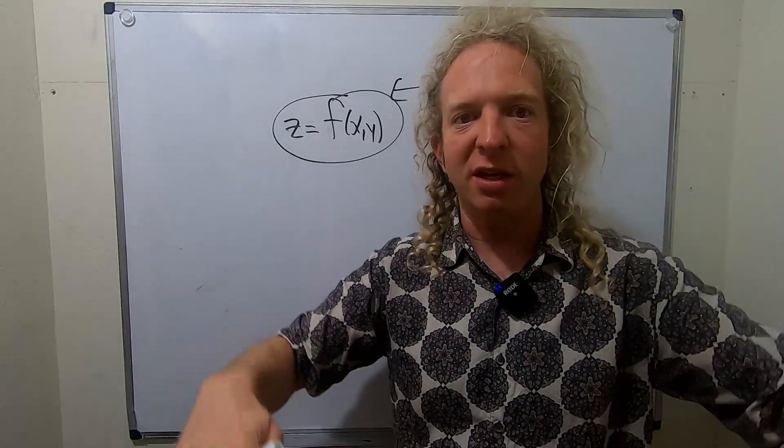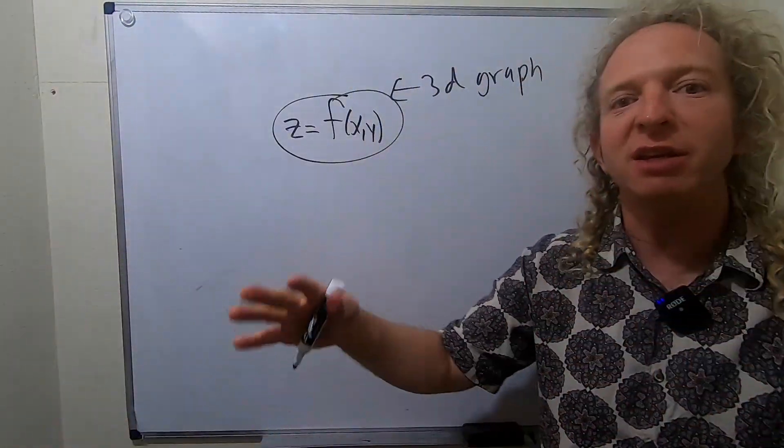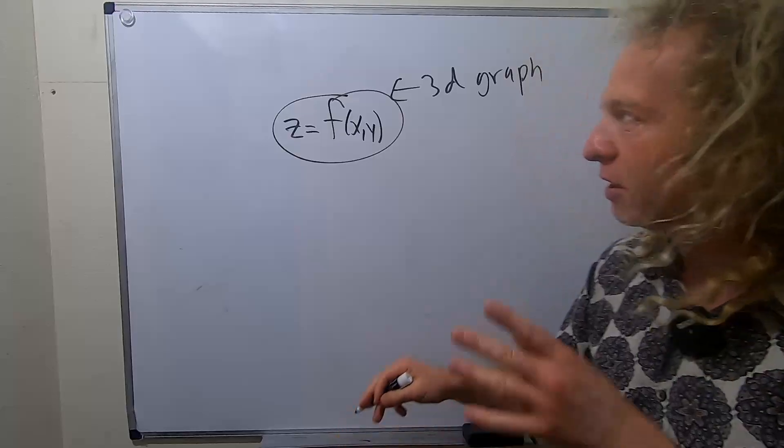And we're standing on top of that three-dimensional object right now. We're standing in rolling planes. Try to put yourself there. So, what is the gradient?